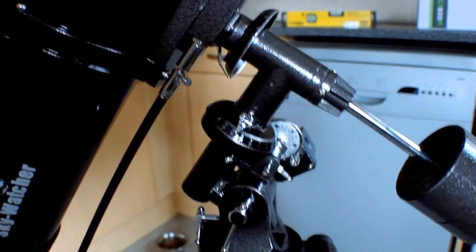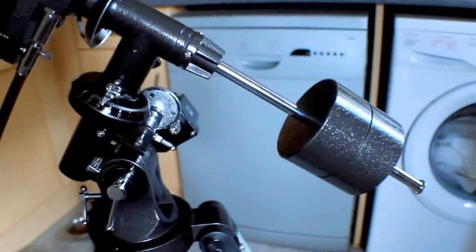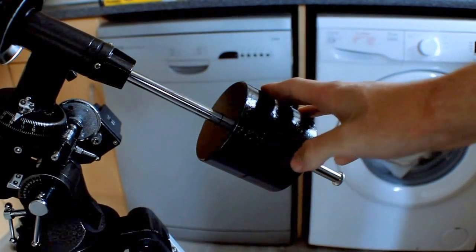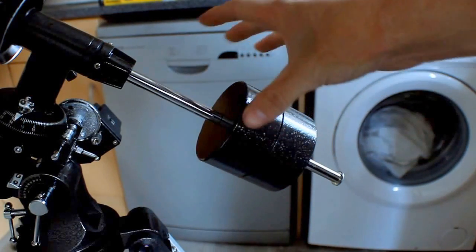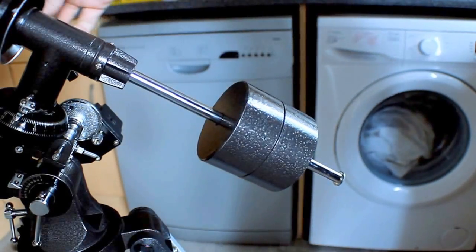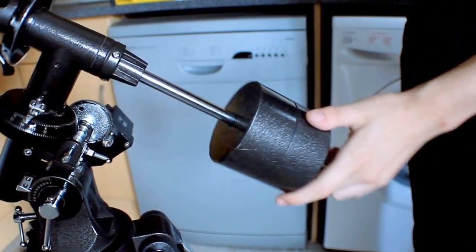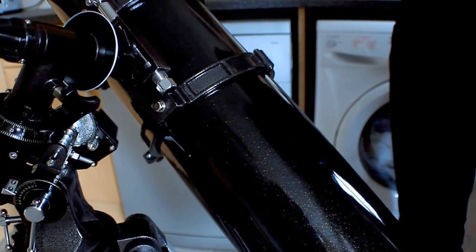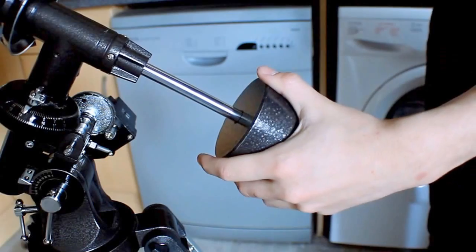Next up, we've got what is known as the counterweight. This counterweight is used to balance the telescope, so when it's at awkward angles, the telescope doesn't drop or move. So, for example, I could move the telescope like that, and it will stay in that position because of it being balanced. In a minute, we'll go through the process of balancing the telescope.